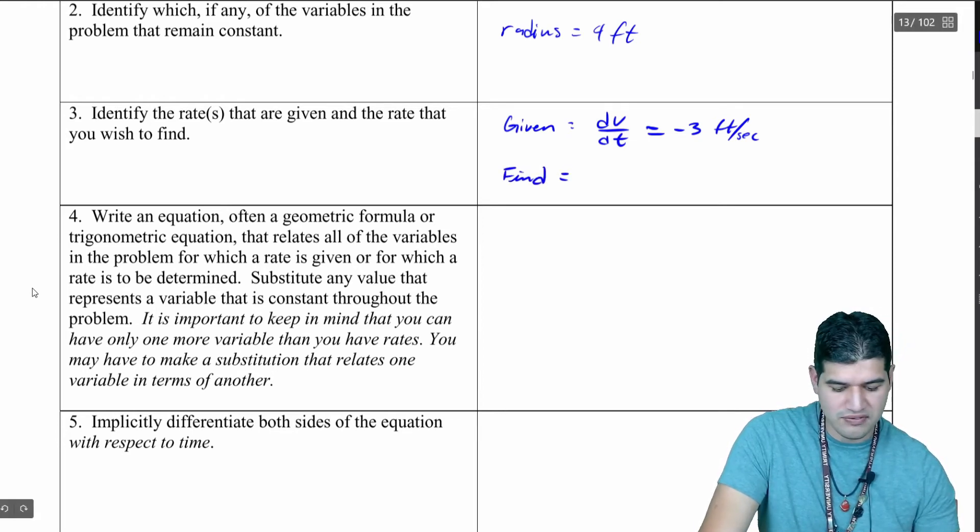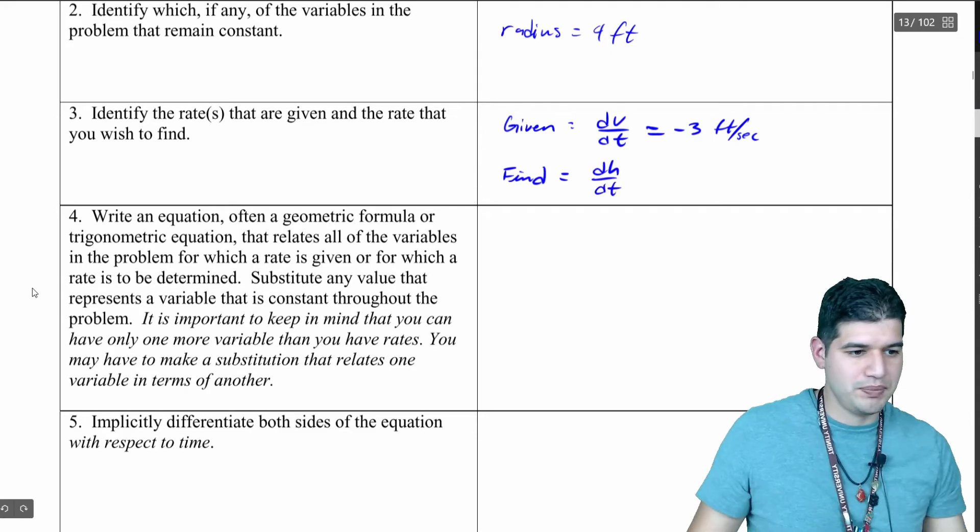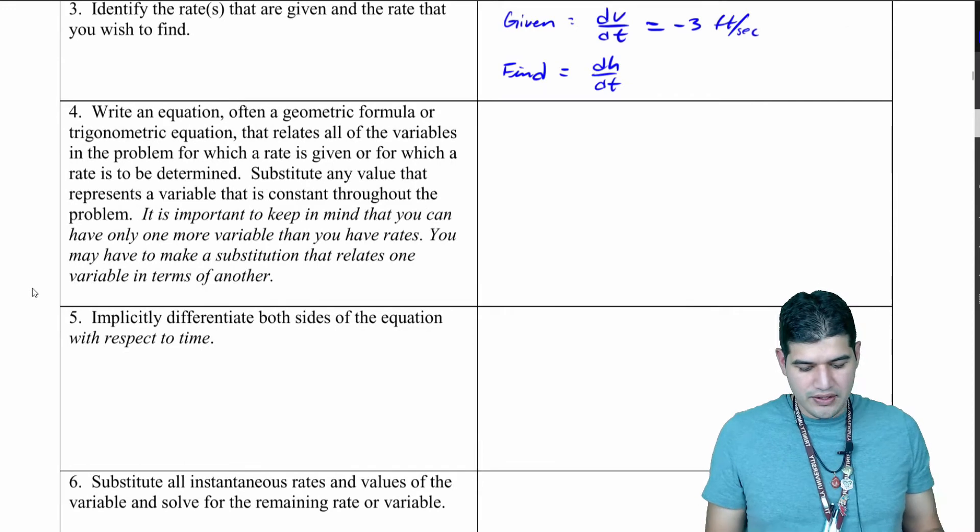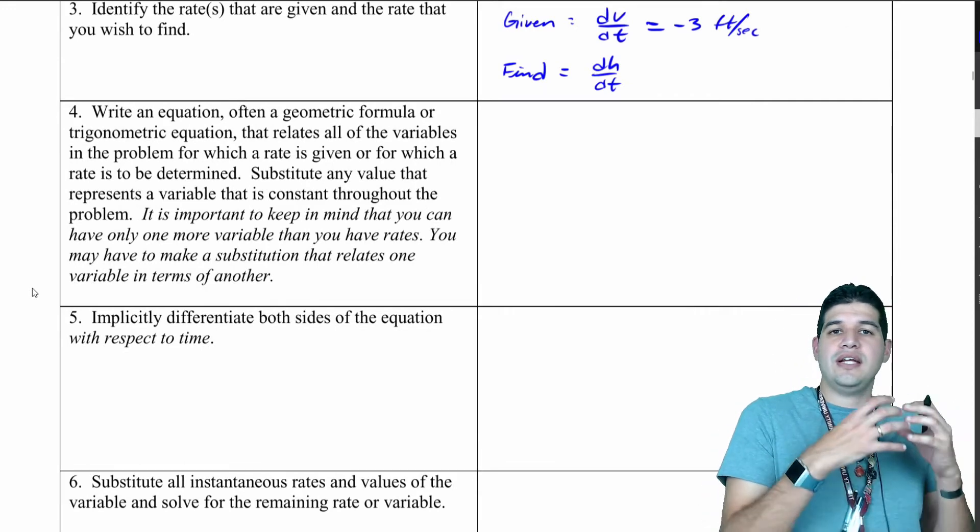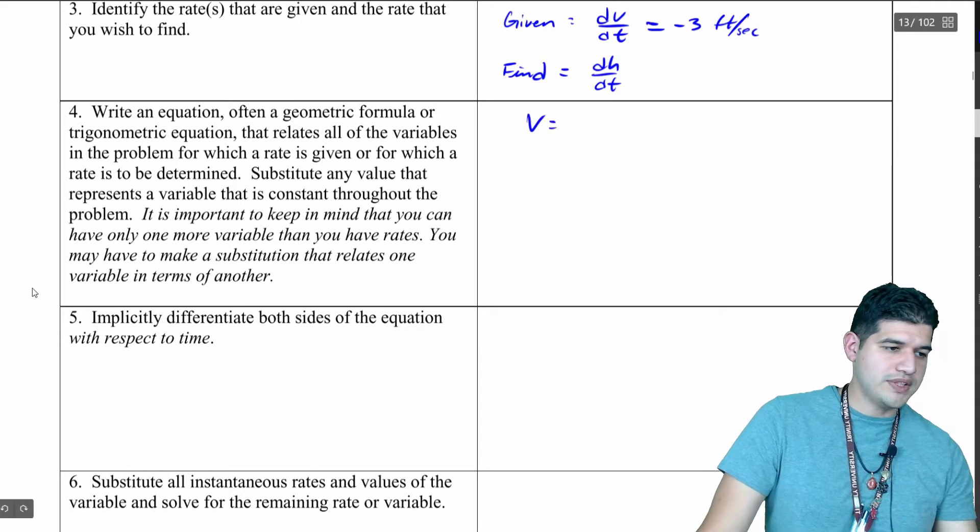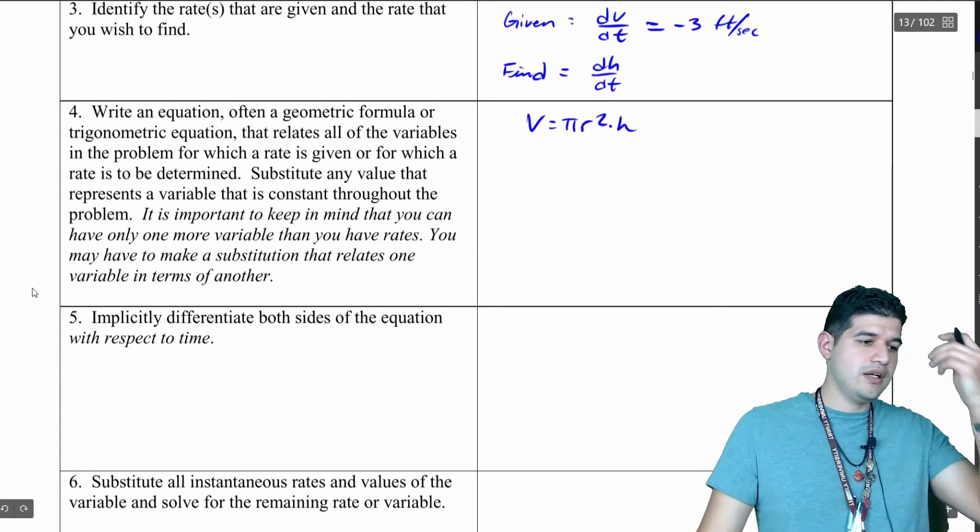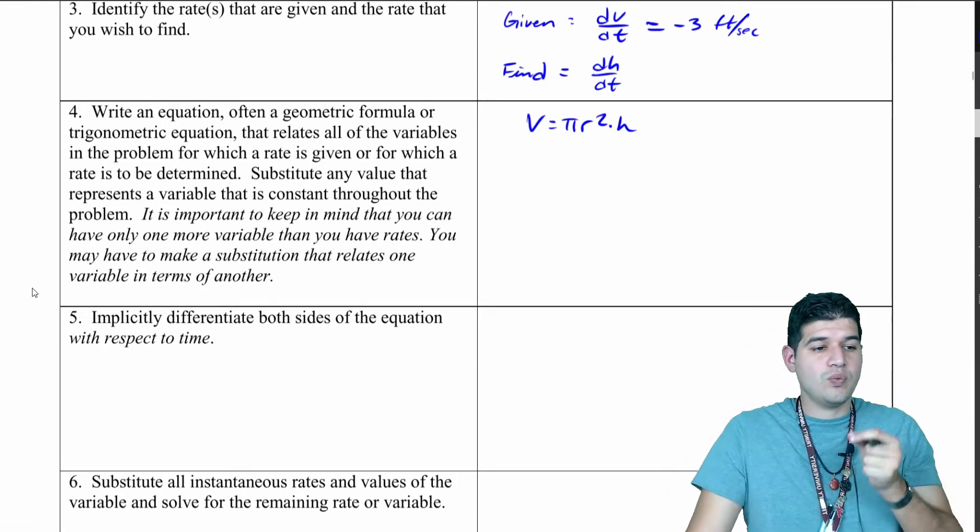What do we want to find? We want to find dh/dt. Here's the equation for the volume of a cylinder: volume is going to be π r² times the height. Don't worry about differentiating yet because we're going to substitute any values that remain constant, which in this case is the radius.